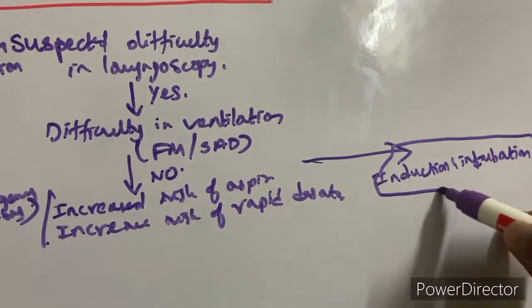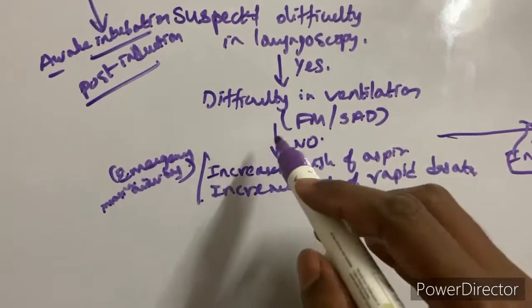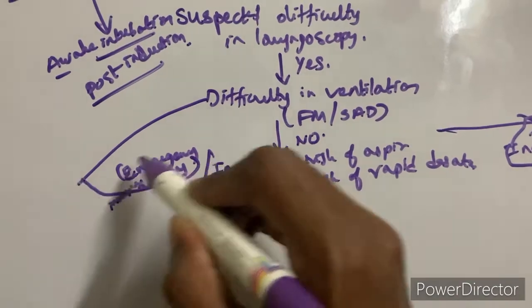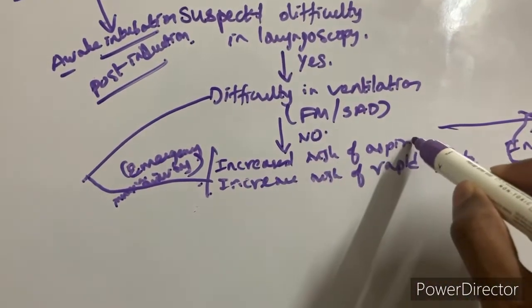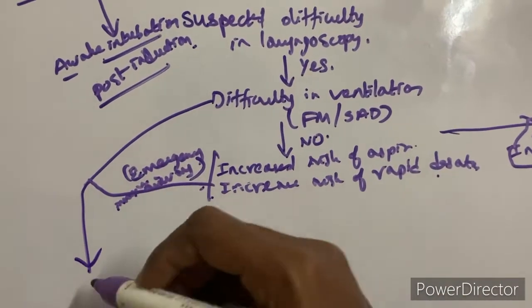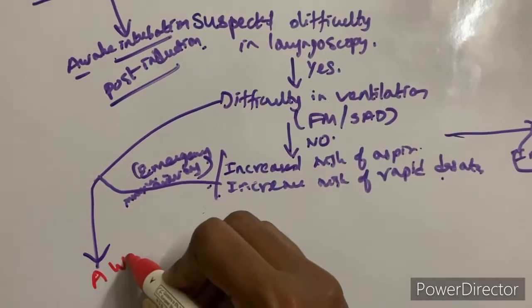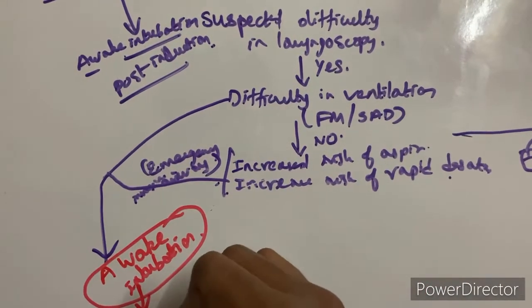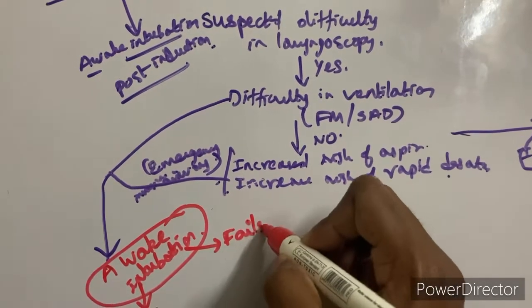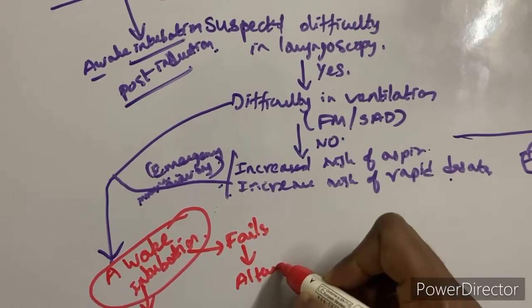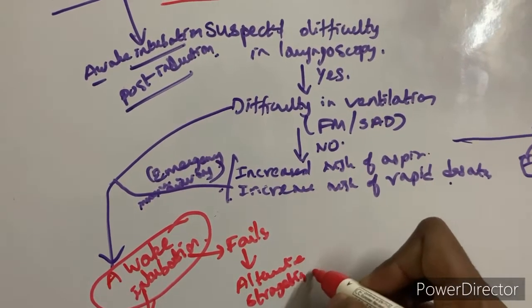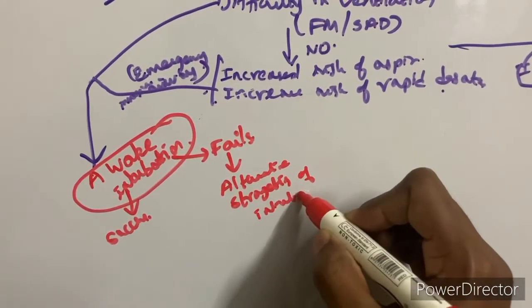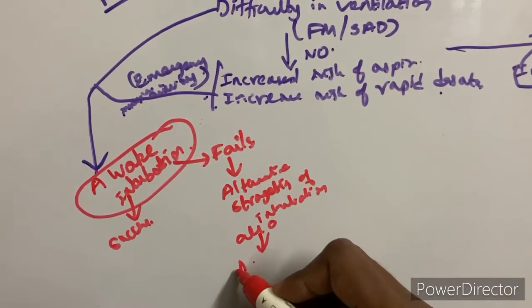If the patient has suspected difficult laryngoscopy along with difficulty in ventilation, increased risk of rapid desaturation, or increased risk of aspiration, then awake intubation is preferred. If awake intubation is successful, proceed with the procedure. If awake intubation fails, consider alternative strategies for intubation. If those alternative strategies also fail, awaken the patient.